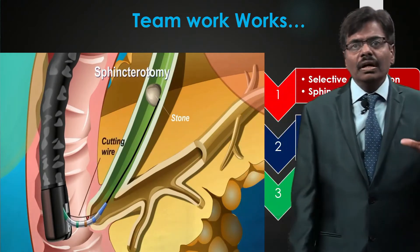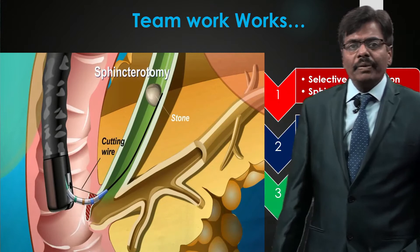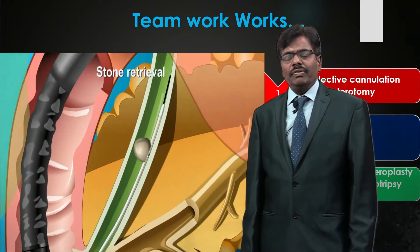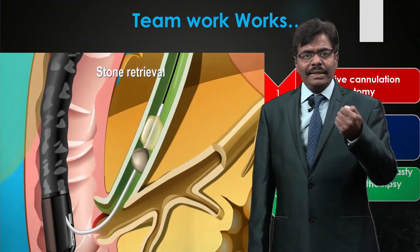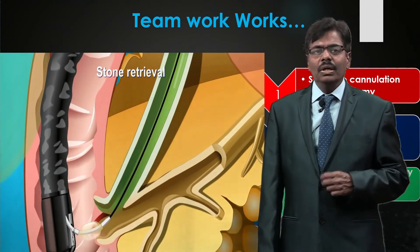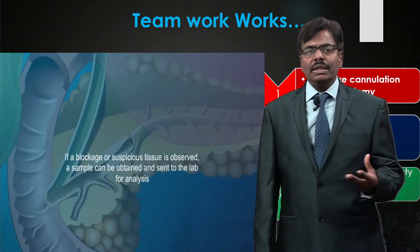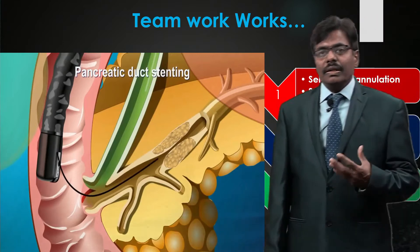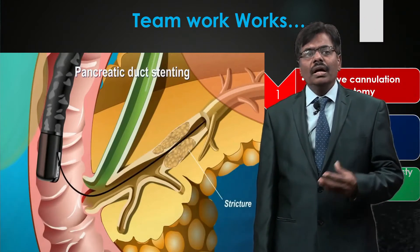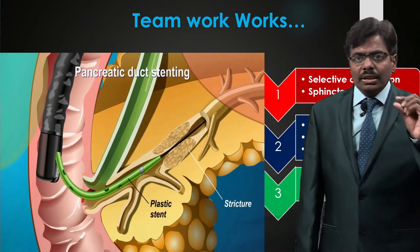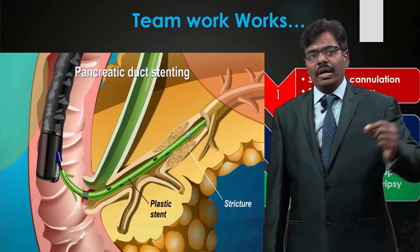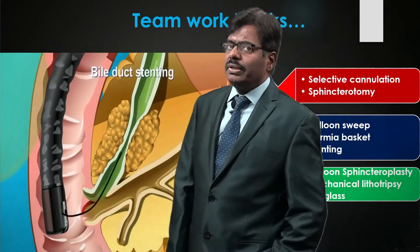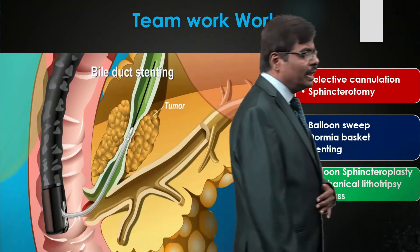Here you can see a sphincterotomy being performed. Once done, the surgeon pushes a Fogarty balloon, inflates it, and drags it — as you can see, the stone is dropping down into the duodenum. If there are suspicious lesions, you can even take a biopsy; for example, if a patient has a stricture or pancreatic cancer, you can biopsy and then place a stent. This schematic shows how you railroad and exchange to leave an Amsterdam-type stent — biliary or pancreatic — in various sizes and diameters.